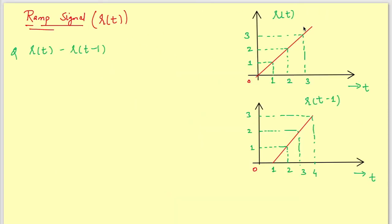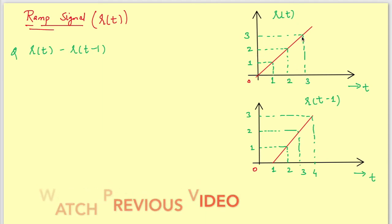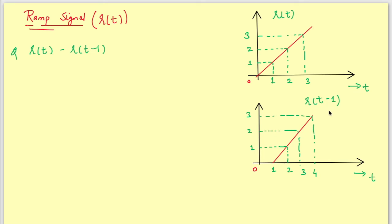Now this is my ramp signal r(t). The value of r(t) is 1 at t=1, 2 at t=2, and 3 at t=3. For r(t-1), the signal starts from t=1, with value 0 at t=1, value 2 at t=3, and value 3 at t=4. The ramp signal r(t) is written as t·u(t) — I will prove this later.